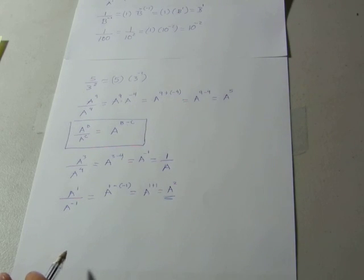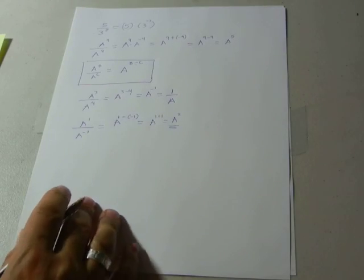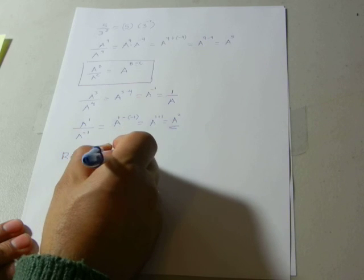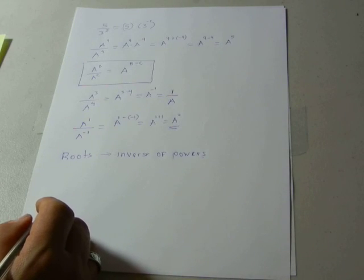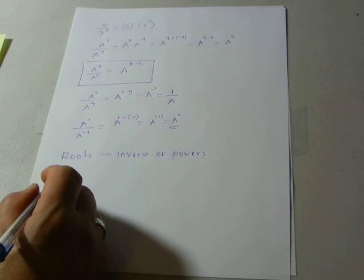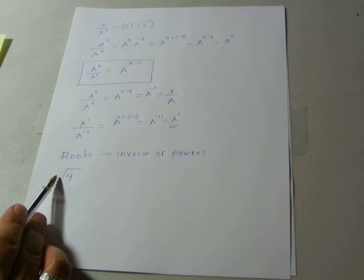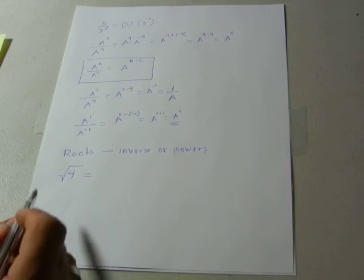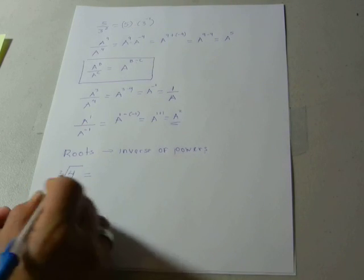Finally, to finish this section, we will cover the last operation: roots. Roots are basically the inverse of powers. Let's start with a simple example — everybody has calculated the square root of 4. There is actually a number assigned to that radical symbol: for the square root we almost never write the 2, but let's use it for educational purposes.